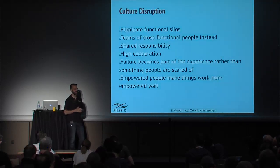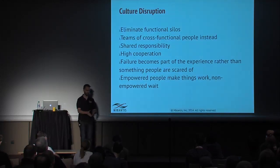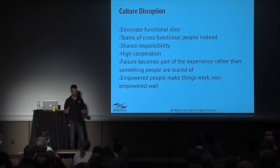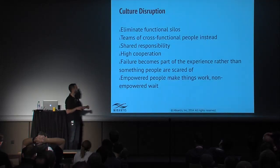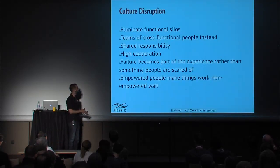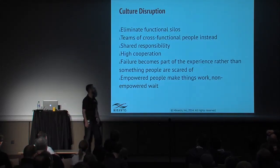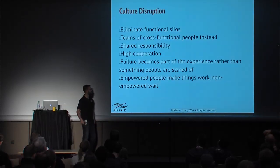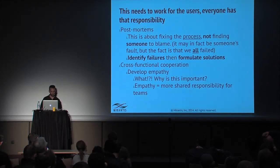The ideal situation is a small, cross-functional team with a security person, QA person, developer, and operator — observe the two-pizza rule. They have shared responsibility: when something breaks, it's everybody's fault. Failure is expected; it's part of the experience, and we live to fix it. The whole point is to empower people — empowered people solve problems, whipped people wait around. In post-mortems, which you should have often, you want to fix the process, not find someone to blame. It may in fact be someone's fault, but the system allowed it — that's where the failure should be identified.